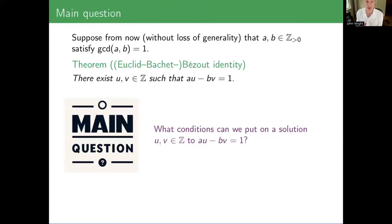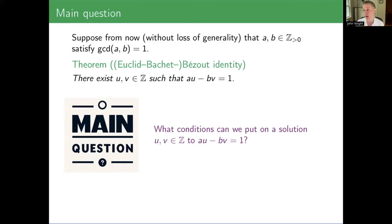Okay, so the main question for today: given that there exist integers U and V, we're going to be obsessed with trying to put additional conditions on the integers U and V. Maybe you might want to know that they're separately primes, maybe smooth numbers. I believe there is a version that could apply to this type of situation.